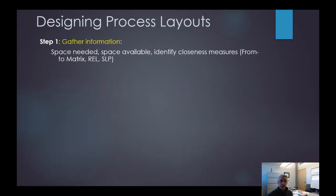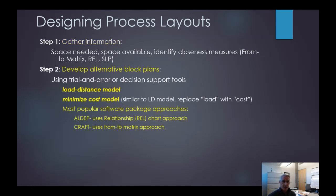Step one: we want to gather information. We need to know how much space we think we need, how much space we have available — maybe we're already in a space and want to expand, or maybe we're looking at renting a new space. We also identify some closeness measures, and we can look at things like a from-to matrix or a relationship matrix.